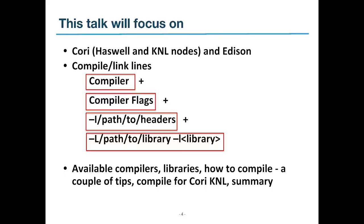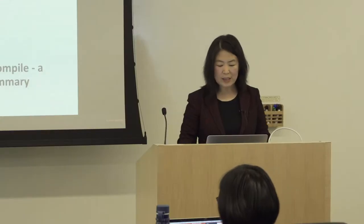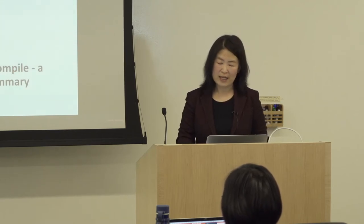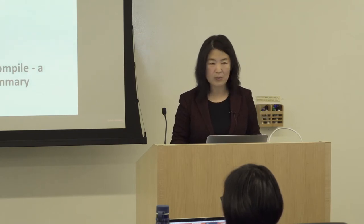I'll talk about how you can take care of all the compilation and link lines. You can see a few components in the red boxes — basically compilers and compiler flags to use, include paths, library paths, and then libraries to put in the link line. I'll generally talk about how to compile on Cori, Edison, and Cori Haswell, and then expand a little bit for KNL.